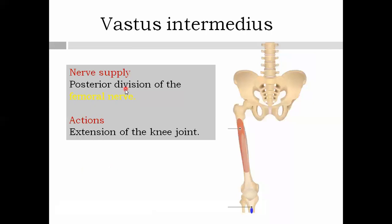Vastus intermedius is present between the vastus lateralis and vastus medialis — hence its name. Its origin is from the lower three-fourths of the shaft of the femur anteriorly, and it inserts below the patella. The nerve supply is the posterior division of the femoral nerve, and its action is extension of the knee.